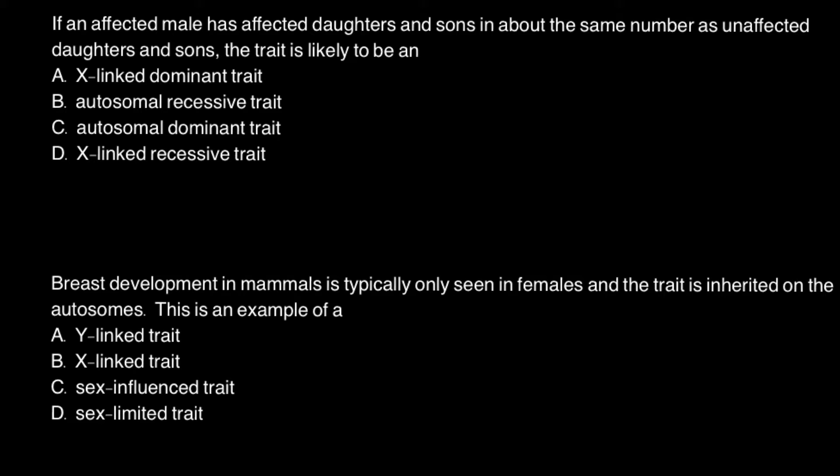According to our problem, this person has equal numbers of daughters and sons who are affected and unaffected, so we can cross out answer A and answer D. Because when we have an X-linked genetic disorder, we might see imbalances between the sexes. But here we don't see any imbalance between sexes, so this means that this is going to be an autosomal genetic disorder.